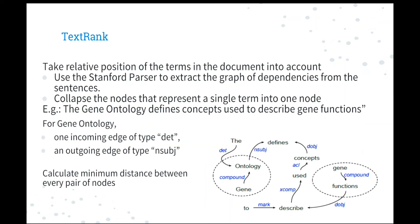We modify the TextRank by taking the relative position of terms in the document into account. We first use the Stanford parser to extract the graph of dependency from the sentences, and we collapse the nodes that represent single terms into one node. For example, for the sentence 'the gene ontology defines concepts to describe gene functions,' we first build the dependency graph and collapse gene ontology and gene functions, which in fact are phrases. And then we will use the undirected version of this graph and calculate the minimum distance between pairs of nodes. This distance will be used jointly with the previous distance from TextRank to decide the edge weight.